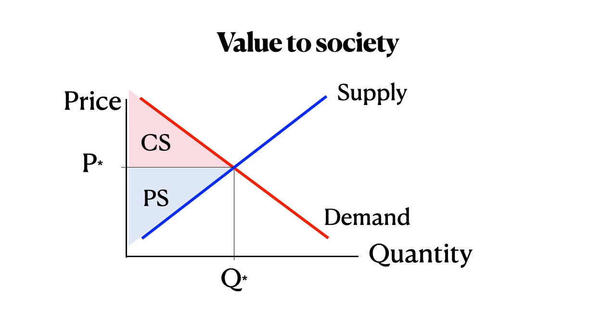That we have the highest consumer surplus and producer surplus combined possible given the supply curve and given the demand curve. And this shows us our net value to society. That also shows us the market efficiency of our optimal outcome.